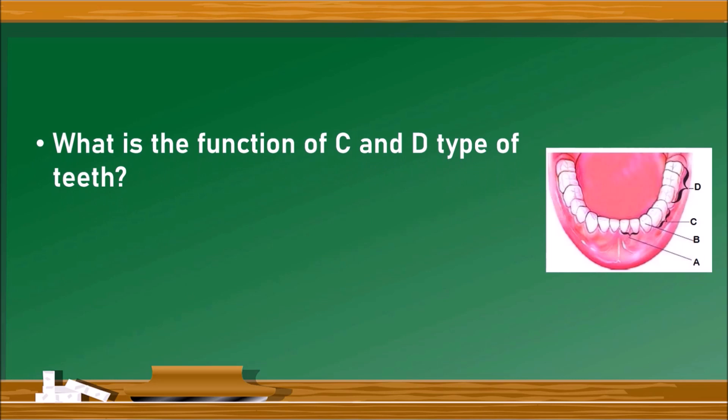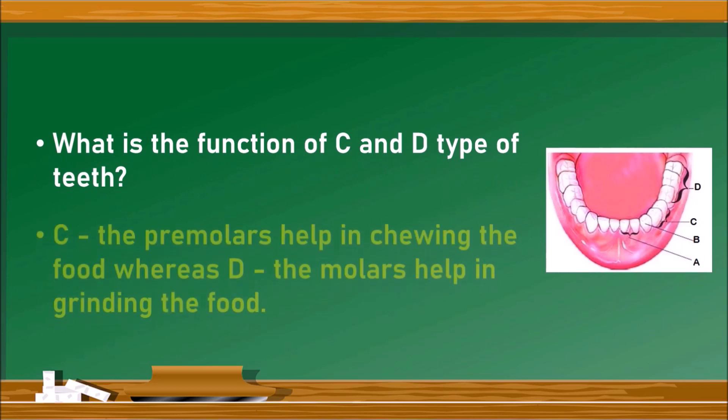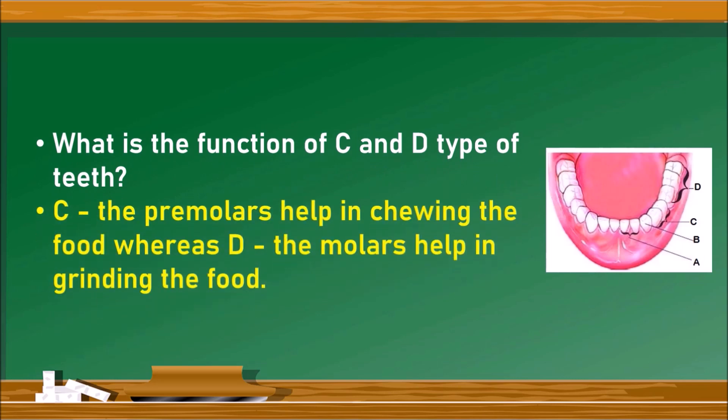What is the function of C and D type of teeth? In this diagram, the C type of teeth indicates premolars which help in chewing the food, whereas D indicates molars which help in grinding the food.